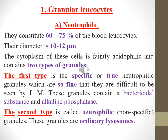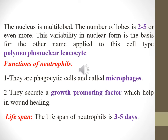The second type is called azurophilic granules, or non-specific granules. These granules are ordinary lysosomes. The nucleus is multi-lobed — the number of lobes is two to five or even more. This variability in nuclear form is the basis for the other name applied to this cell type: polymorphonuclear leukocyte.